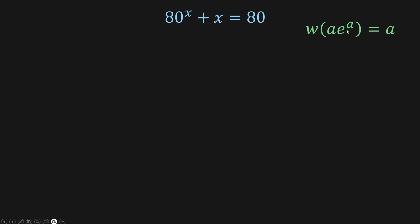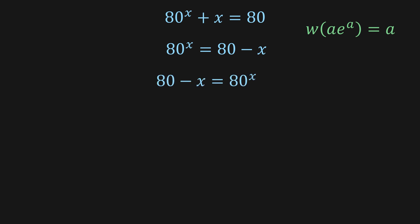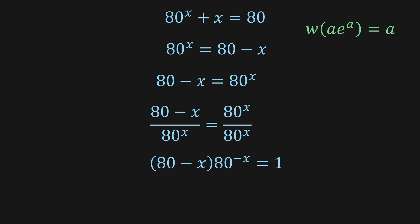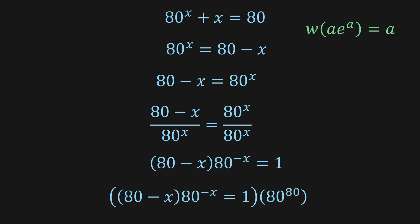So let's solve. I'm going to send the x to the right side of the equation, flip the equation, and divide both sides by 80^x. Then I'm going to multiply both sides by 80^80 so that in the exponent we have 80^(80 - x). So we're multiplying both sides by 80^80.